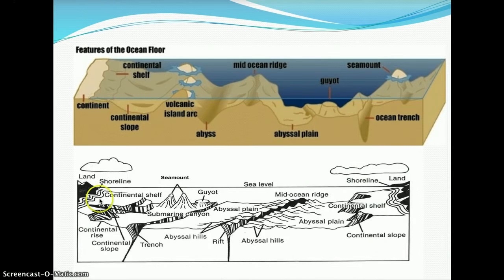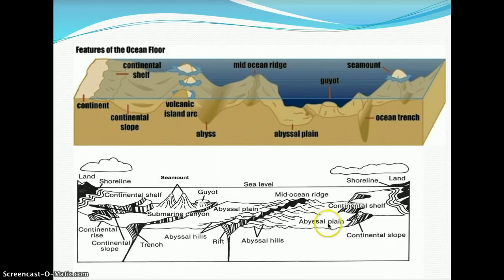Looking at another diagram: here we have the continental shelf, the continental slope, the continental rise, a trench, a guyot, the abyssal plain, and then the ridge and rift valley — the ridge being the mountain ranges and the rift valley being the valley between them. Coming over toward the other continent, you have the abyssal plain again, then continental rise, continental slope, continental shelf, shoreline, and land.